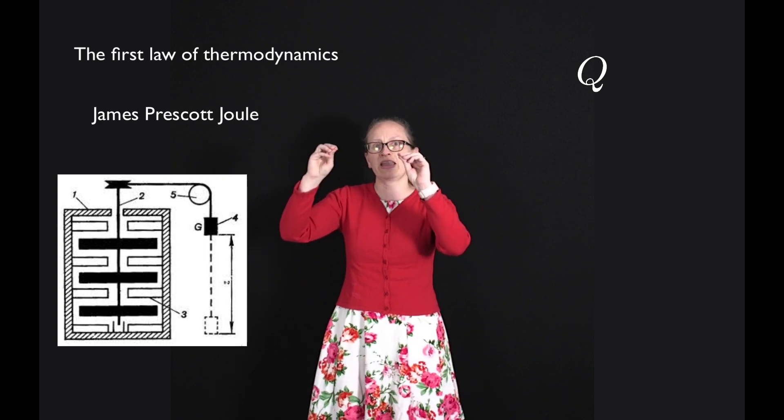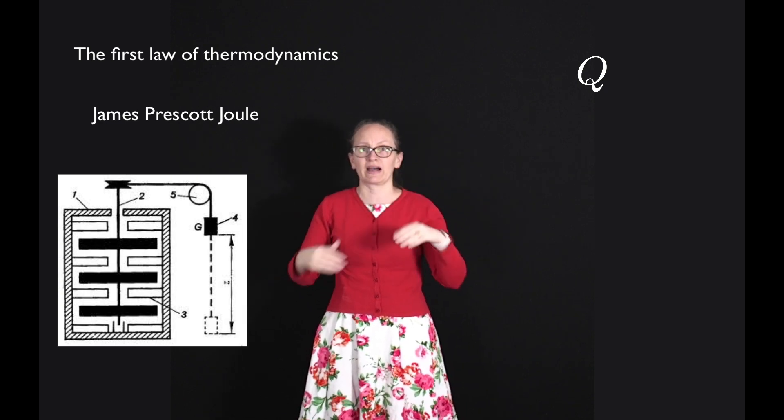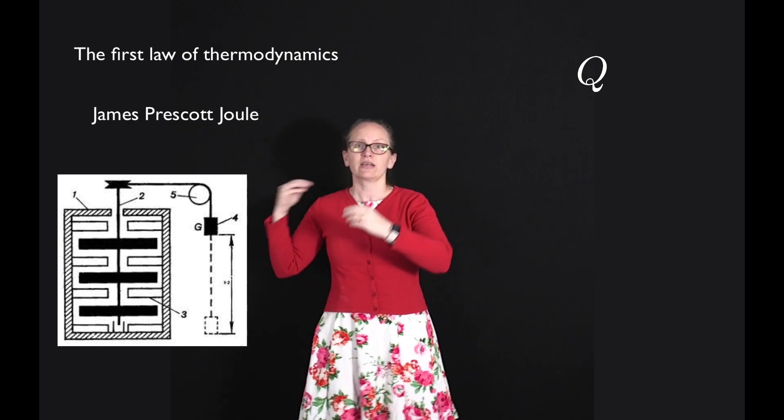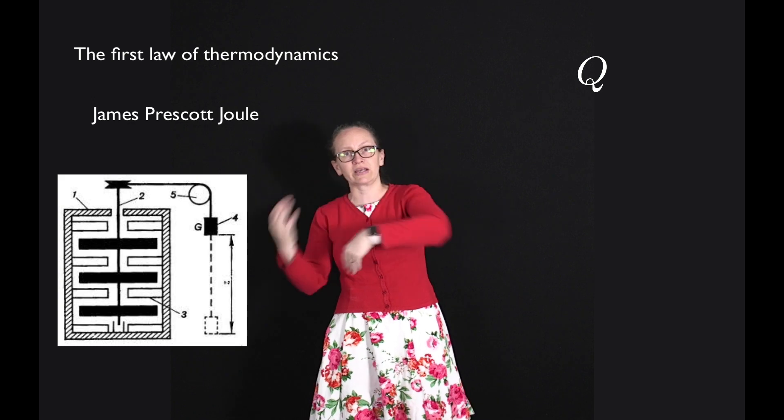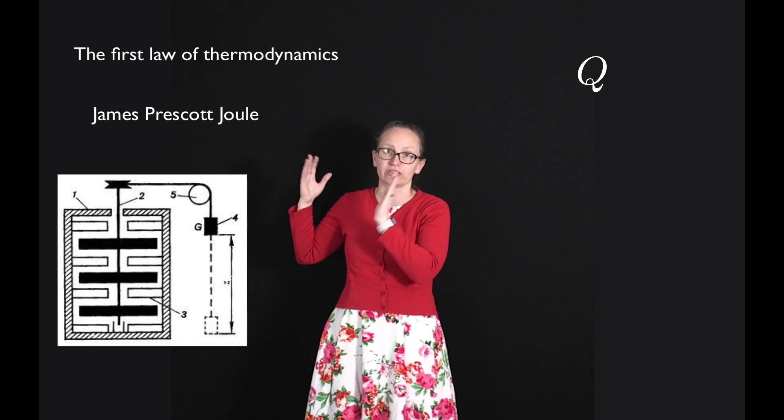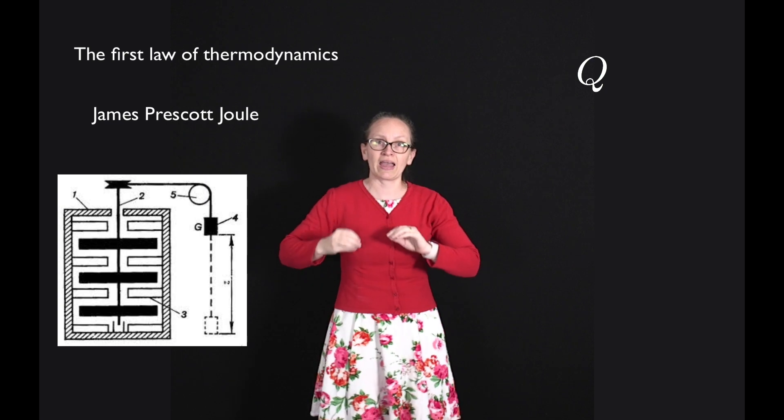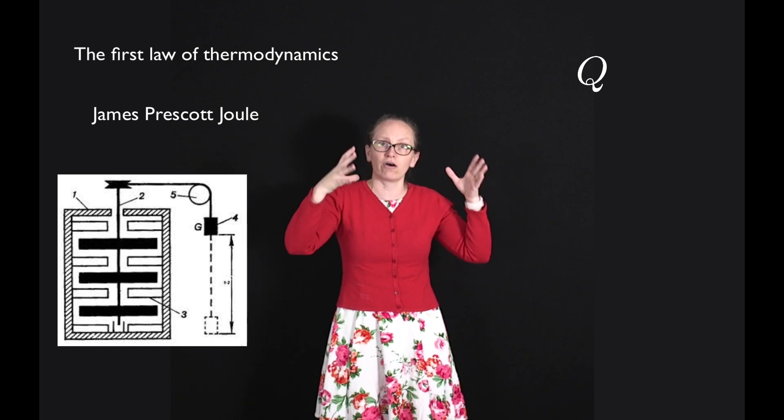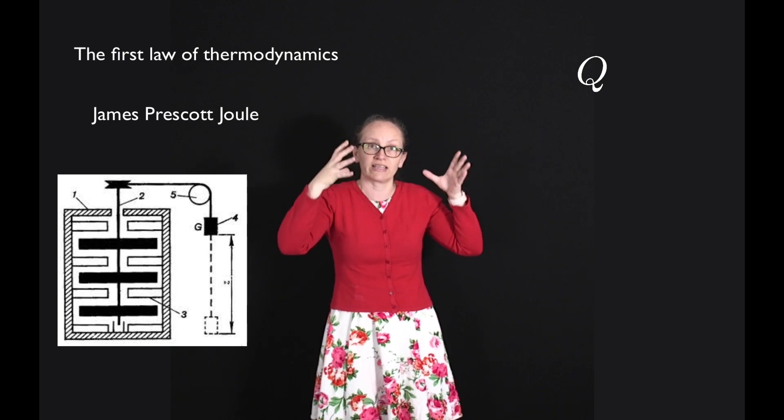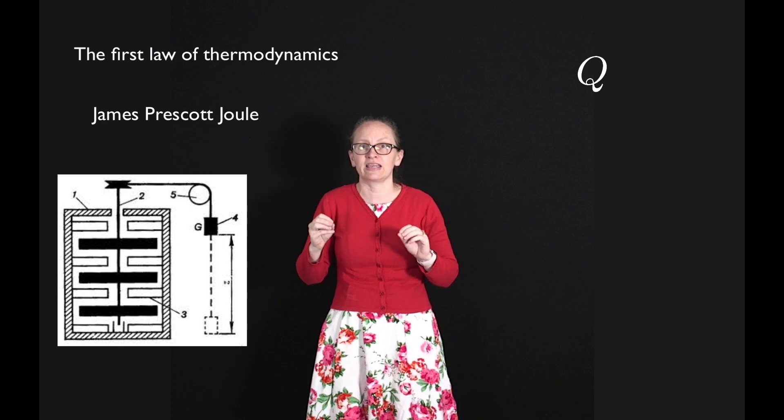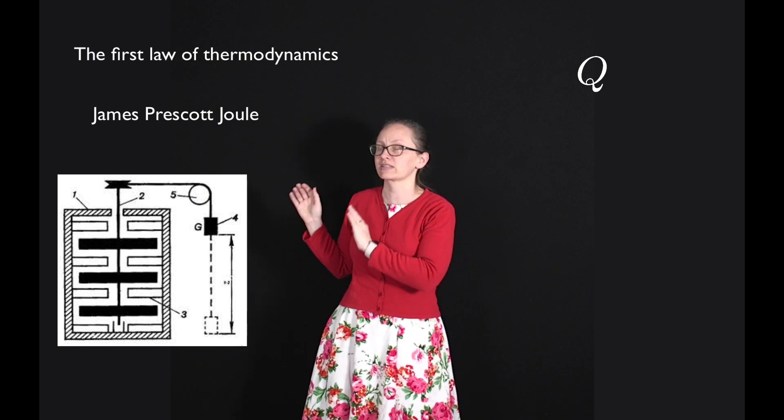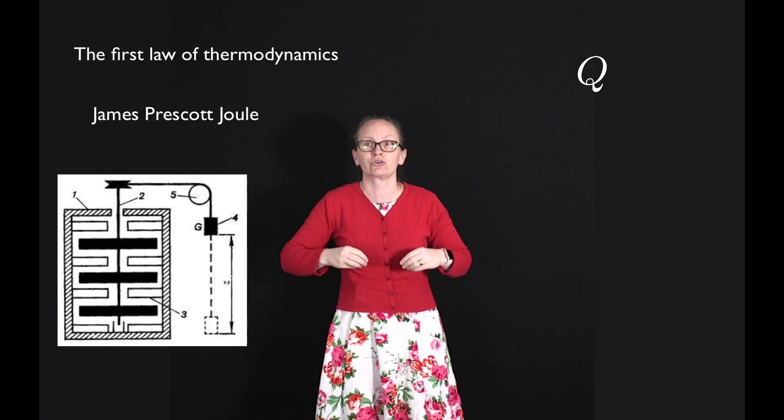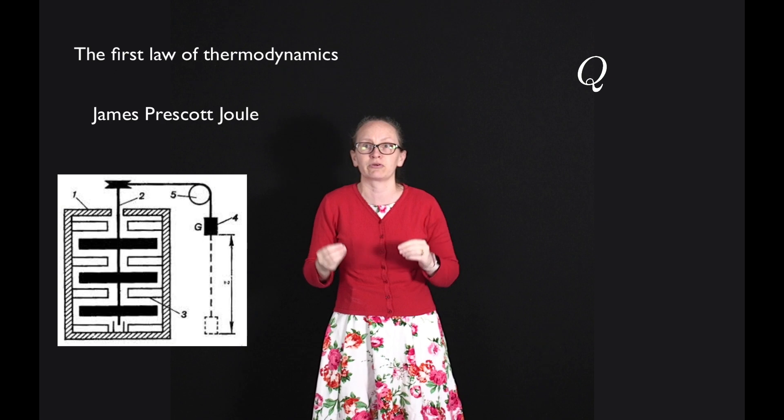What he found was that if he had a mass which was dropping under the influence of gravity, so the hanging mass was losing gravitational potential energy, he could get this to turn paddle wheels inside a calorimeter which contained water. And as the mass dropped there was a slight temperature change of the calorimeter and the water inside it, and from this he could see that the amount of work done on the system was proportional to the heat that was transferred.